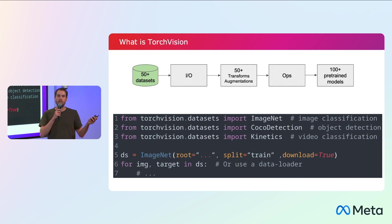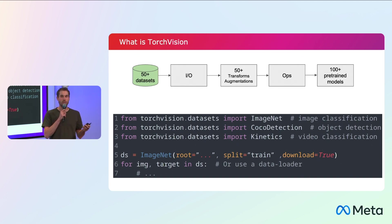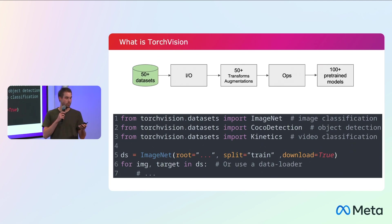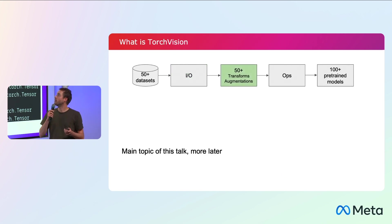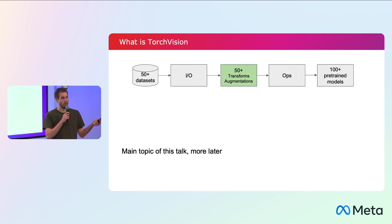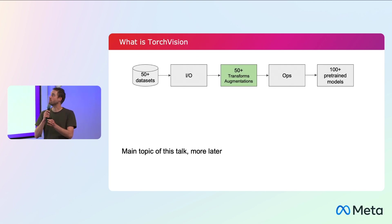We provide a bunch of datasets, typically for image classification, but also for image detection, image segmentation, and video. We have APIs to download them automatically if you need to. We also have IO operations for encoding and decoding images, typically JPEGs and PNGs. We have lots of transformations for data augmentation or for training, but also for inference — I'm not going to talk about that now because this is going to be the main topic of this talk.